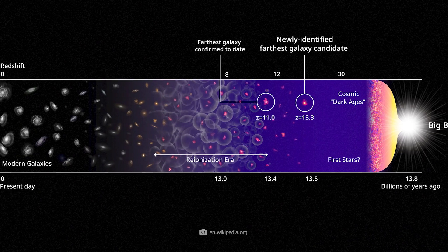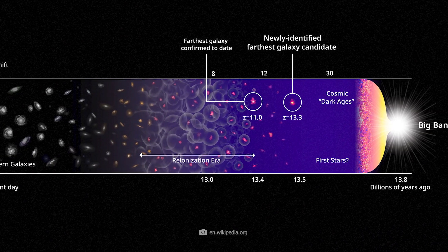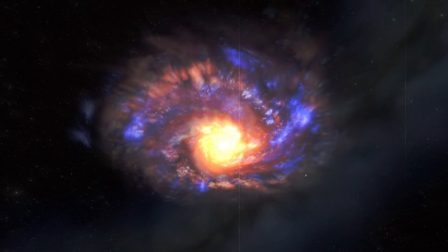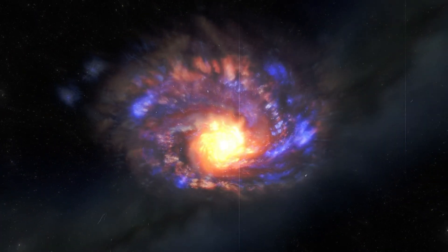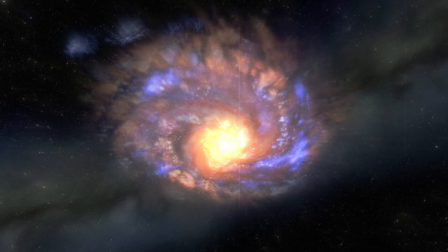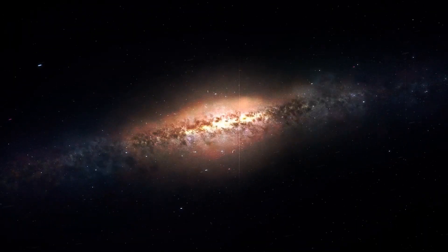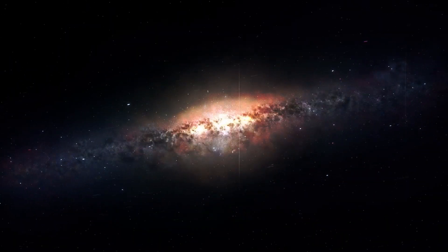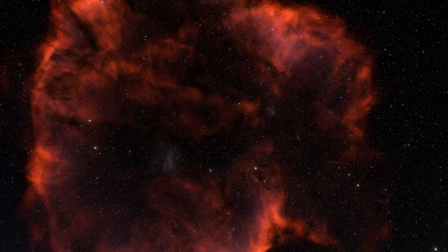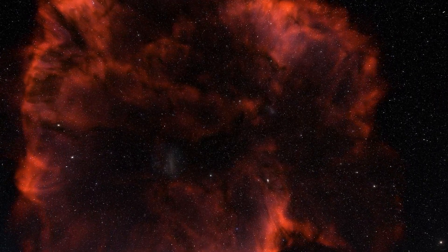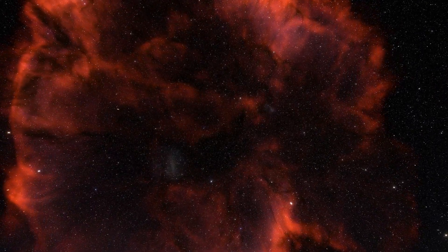But Webb shows that the galaxies close to the time of the big bang already contained heavy elements. This means that they definitely cannot be baby galaxies. Rather, the measurements suggest that these galaxies were already between 4 and 8 billion years old when they emitted the light that we analyze today.